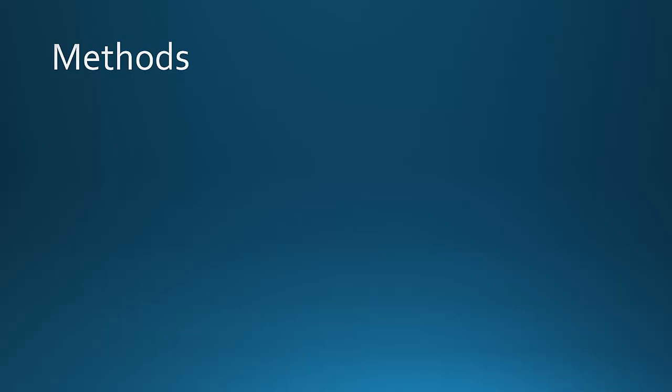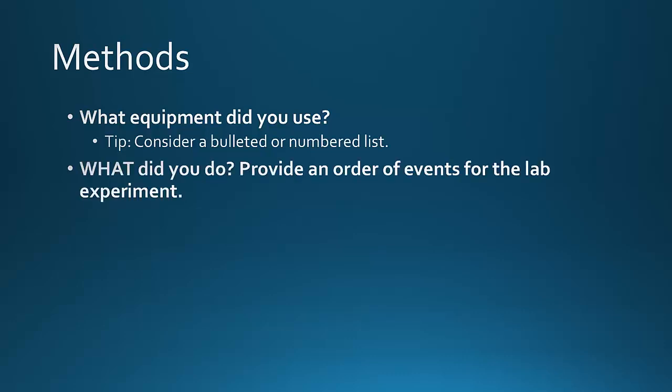So, for the methods section, we're going to start off nice and easy. What equipment did you use? Here's a tip. You may just want to list your equipment in a bulleted or a numbered list. The next question that you answer is, what did you do? So, you provide an order of events for the lab experiment.